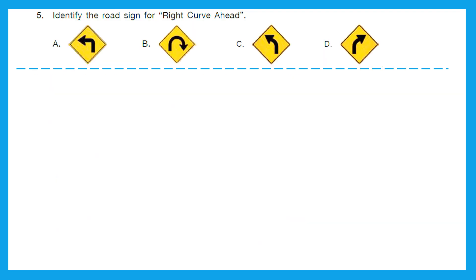Question 5: Identify the road sign for right curve ahead. Option A is left turn, B is U-turn, C is left curve ahead, and D is right curve ahead. We got our answer — that is option D.